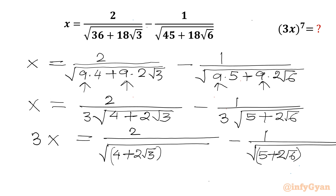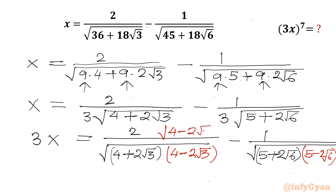Now I will rationalize the denominator. For the first term I need to multiply by (4 − 2√3), and for the second term I will be multiplying by (5 − 2√6). So I need to multiply in the numerator as well: (4 − 2√3) for the first and √(5 − 2√6) for the second.